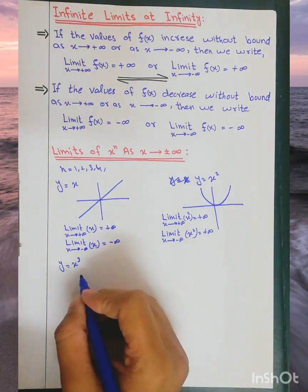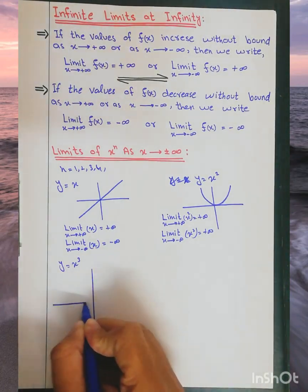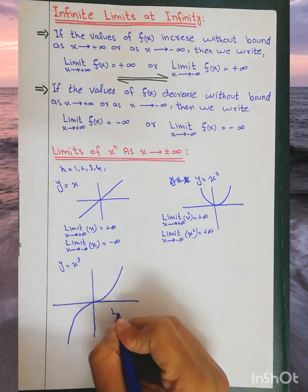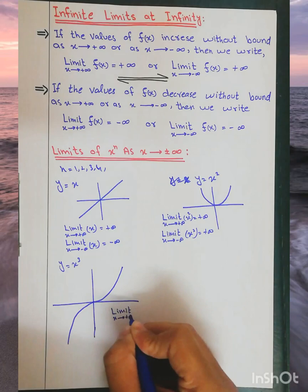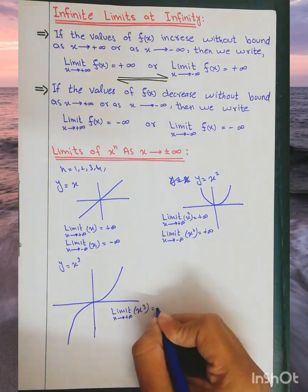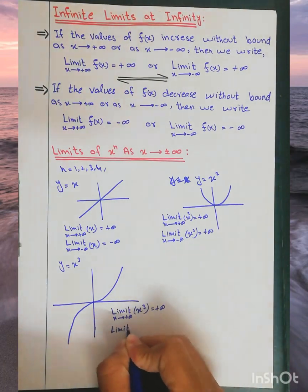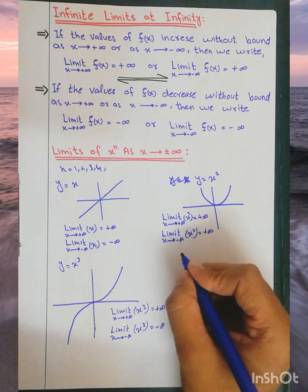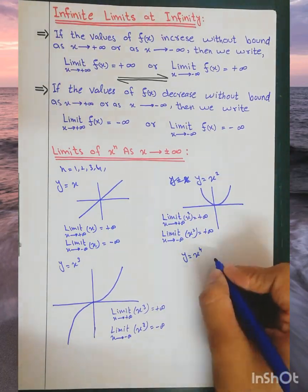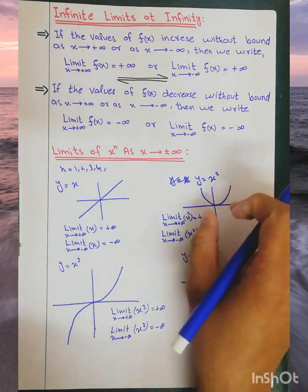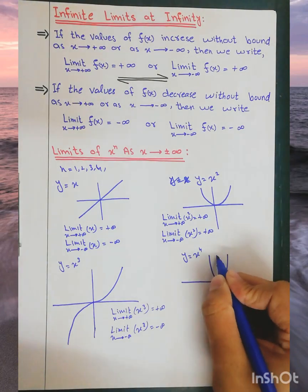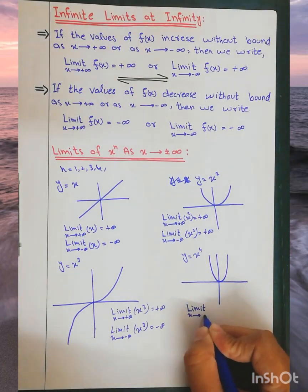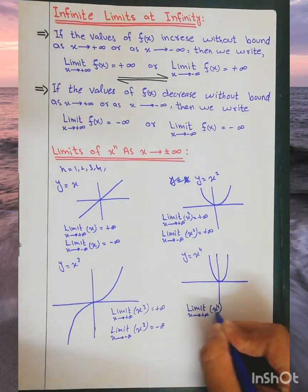Because x squared increases without bound in both directions, it will be positive. The graph of x squared confirms this. Now let's consider y equals x to the power 4. This graph has the same shape, compressed similarly, and the limit as x approaches positive infinity of x to the power 4 equals positive infinity.